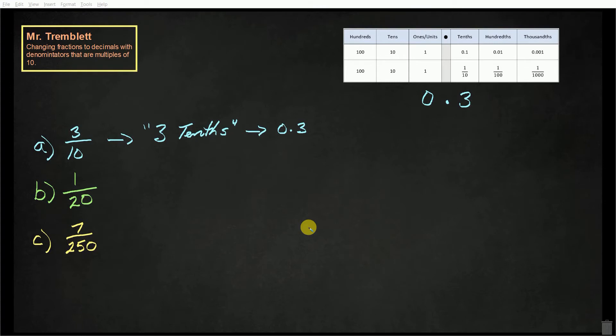In the second example, we have 1 twentieth. We do not have a 20th place value, but we could take this fraction and write it as an equivalent fraction where the denominator is a multiple of 10.